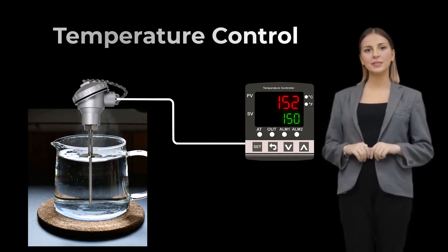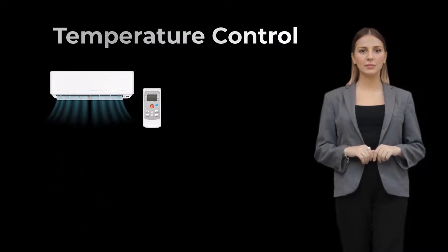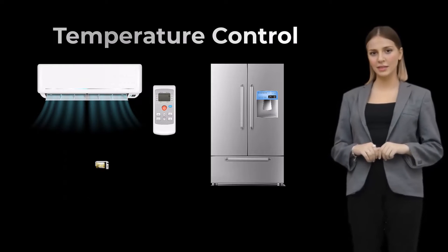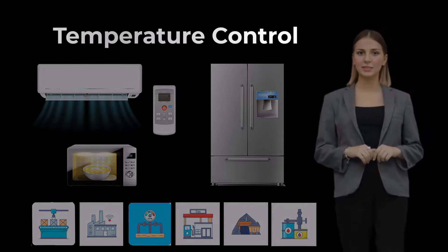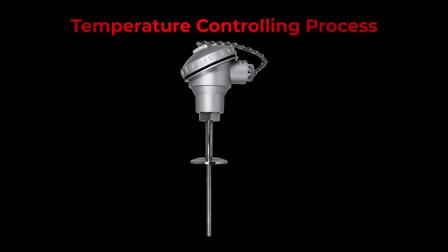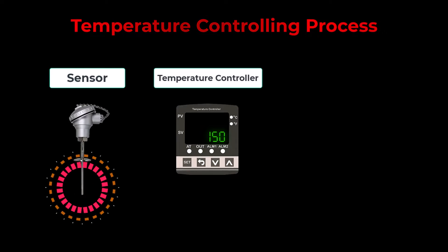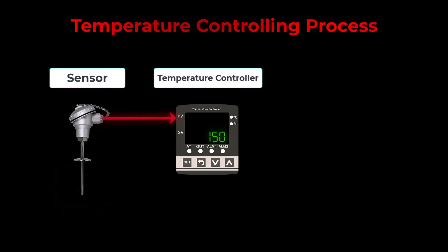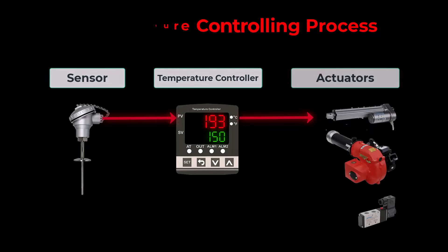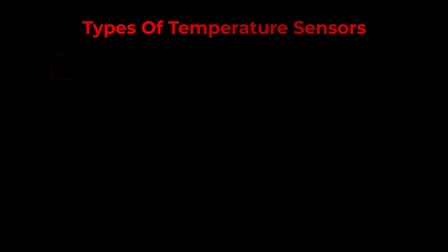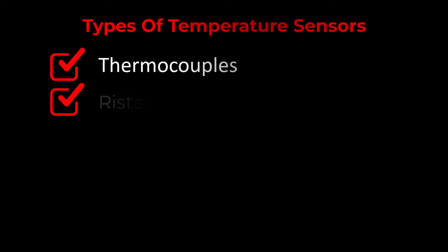When you look around you, you will find many things that are temperature controlled, like room AC, refrigerator, baking oven, and many more. In industries, the temperature controlling process consists of two parts: a temperature sensor and a temperature controller. The temperature sensor measures the temperature and converts it to an electrical signal. The controller reads this electrical signal, displays the readable temperature value, and gives output to control other components and processes.